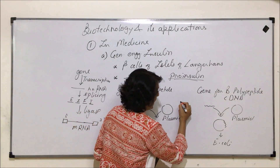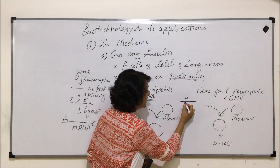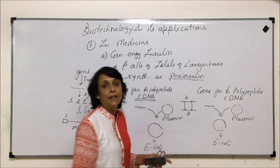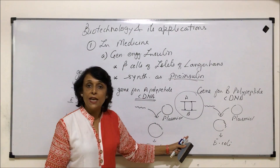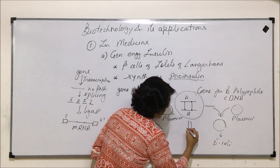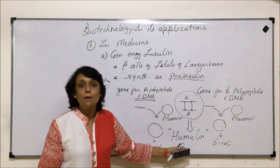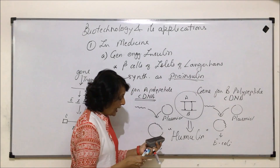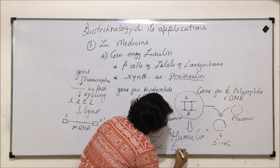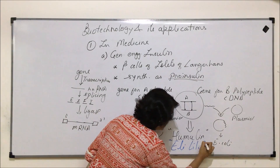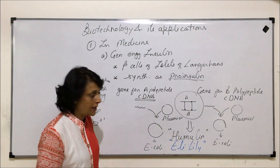These E. coli synthesized only A polypeptide chains, and the other E. coli synthesized only B polypeptides. The two polypeptides were isolated from their respective E. coli. The A and B polypeptides were then kept together under conditions where disulfide bonds can be formed, and straight away insulin was synthesized. This was the functional insulin obtained by genetic engineering, and this insulin was called Humulin. This entire process was done by the pharmaceutical company Eli Lilly.